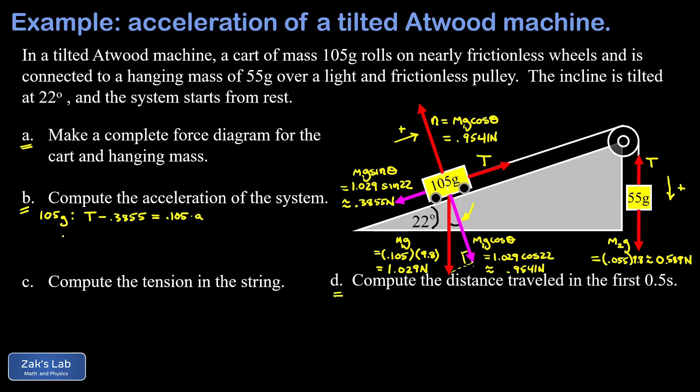We do a similar thing now for the hanging mass, that's 55 grams. The positive direction for this, in order to be consistent with the motion of the cart on the ramp, has to be down. So we're going to count m2g or 0.539 newtons as positive and T as negative. There's your net force in the y direction for that hanging mass, which should be equal to the mass, 0.055, times the acceleration.